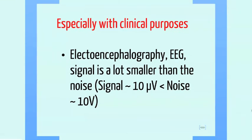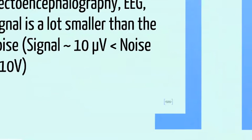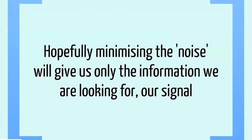This noise can be extremely unhelpful in a hospital. For example, in an electroencephalography, or EEG, the noise — which is the bit we don't want — is substantially larger than the signal, which is the bit we do. For example, a normal result would be a signal of about 10 microvolts, but a noise amplitude of about 10 volts. Hopefully, minimising the noise will leave us with only our signal, the bit we want.